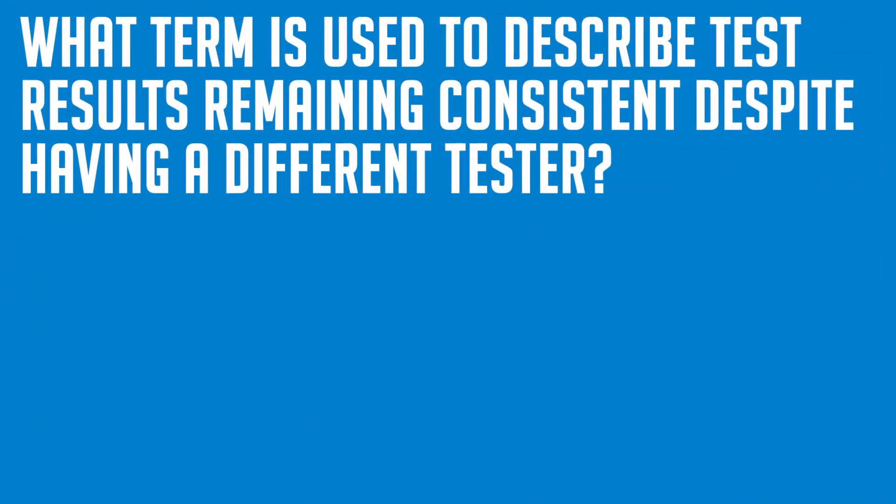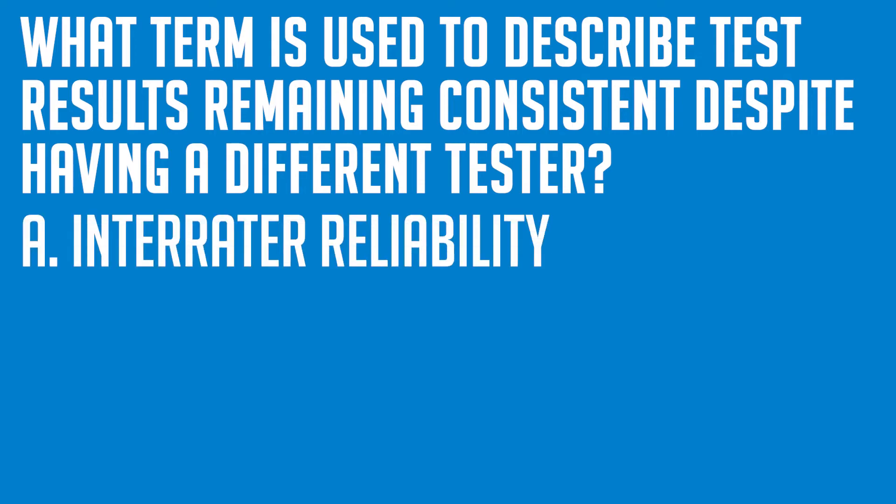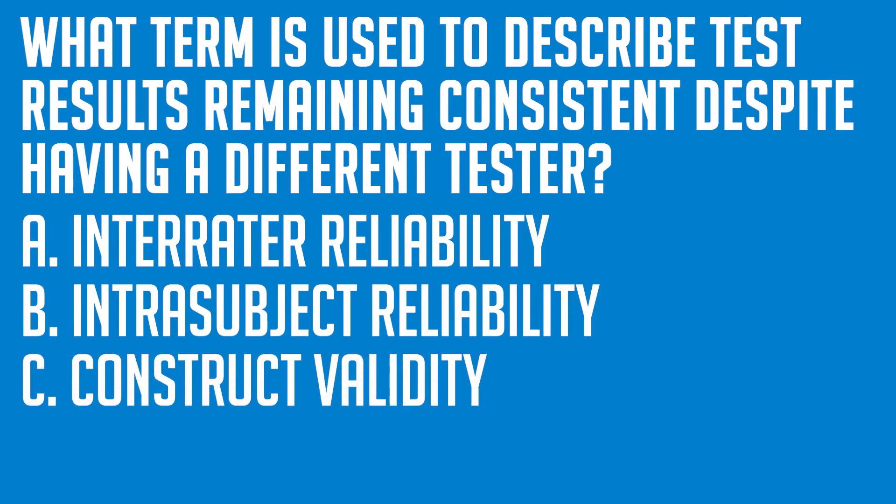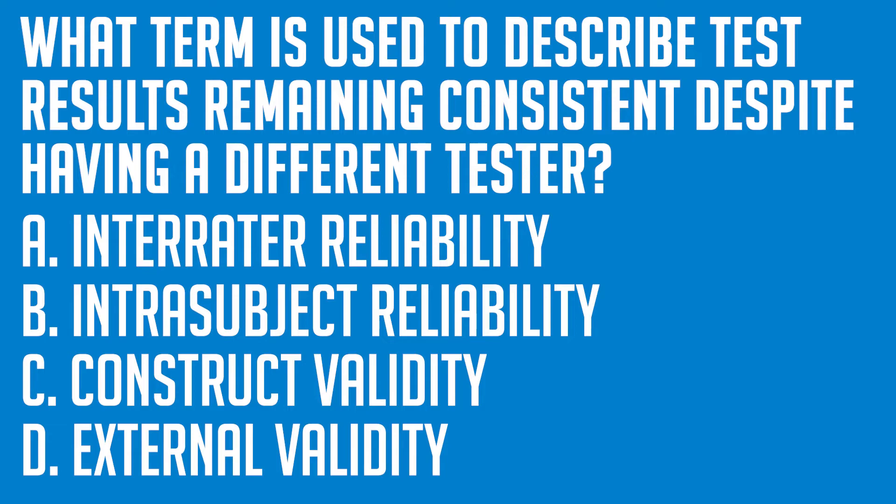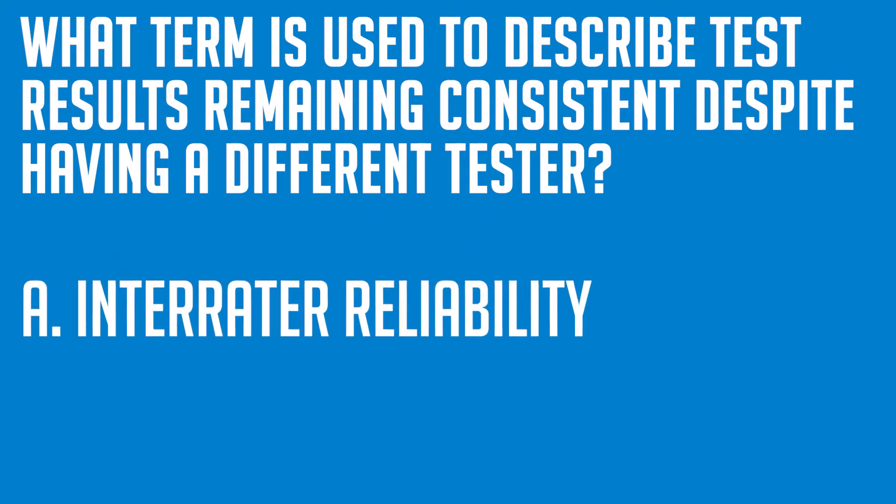What term is used to describe test results remaining consistent despite having a different tester? A: Inter-rater reliability. B: Inter-subject reliability. C: Construct validity. Or D: External validity. In this case, the answer is A, Inter-rater reliability.